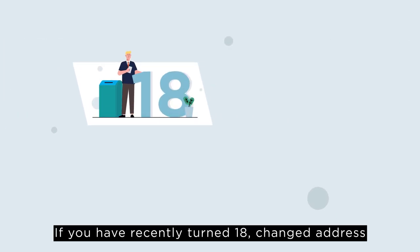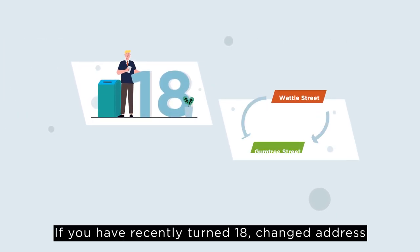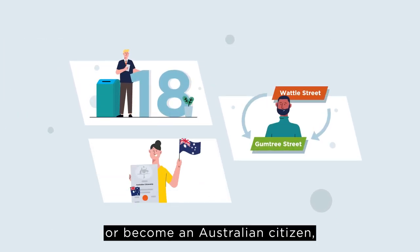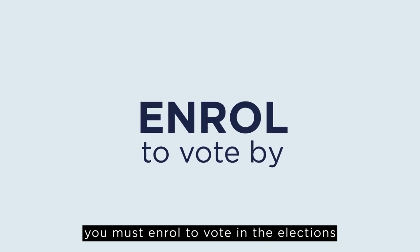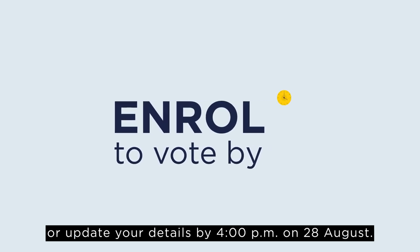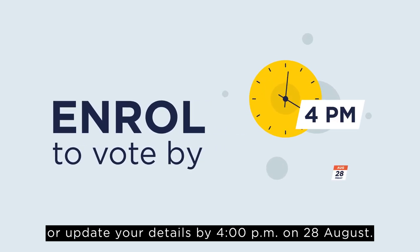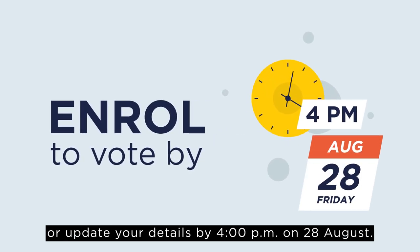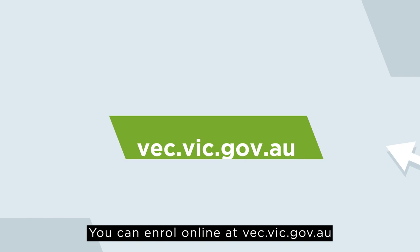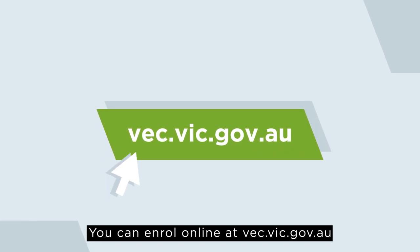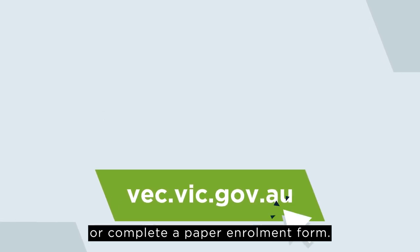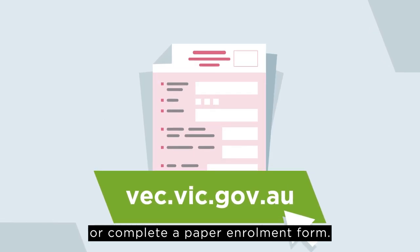If you have recently turned 18, changed address, or become an Australian citizen, you must enrol to vote in the elections or update your details by 4pm on 28 August. You can enrol online at vec.vic.gov.au or complete a paper enrolment form.